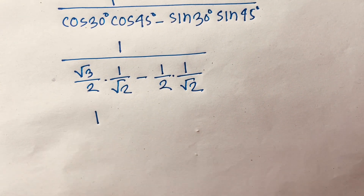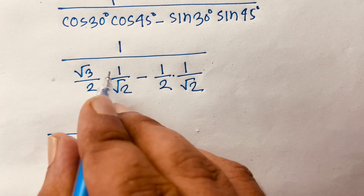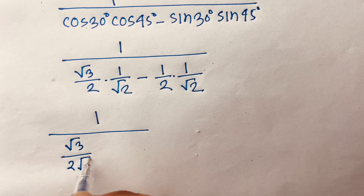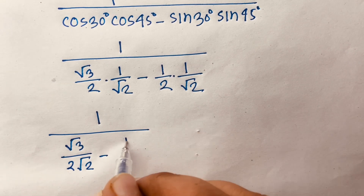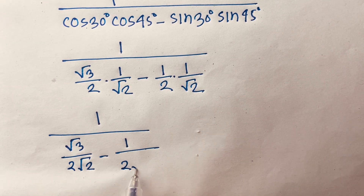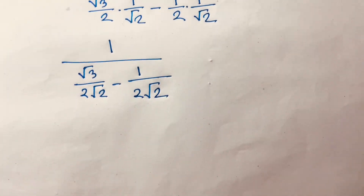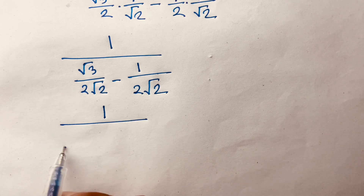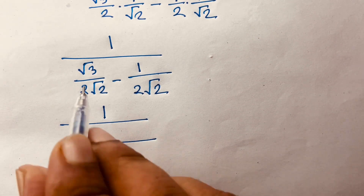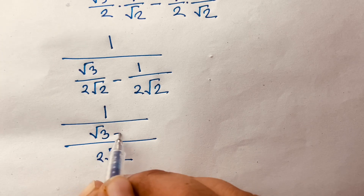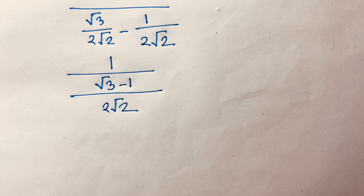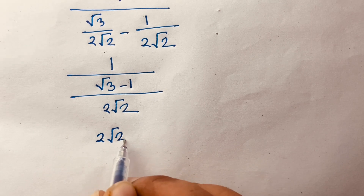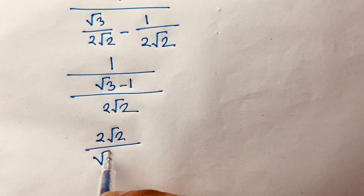Multiplying out: √3/(2√2) − 1/(2√2). Using a common denominator of 2√2, the denominator simplifies to (√3 − 1)/(2√2). So the expression becomes 2√2 over (√3 − 1).